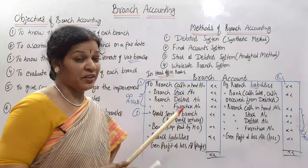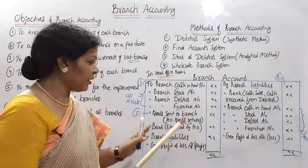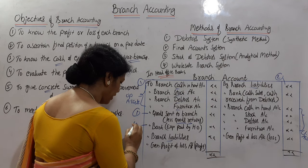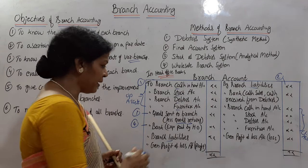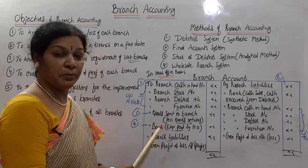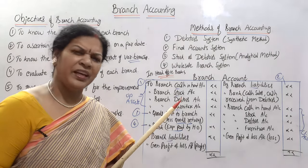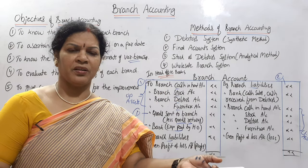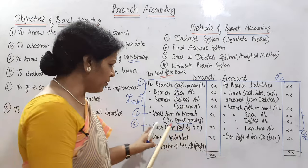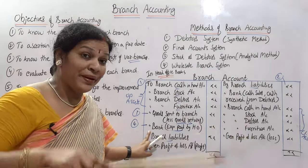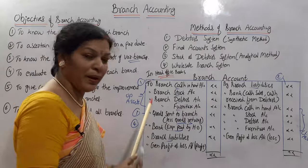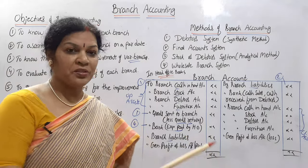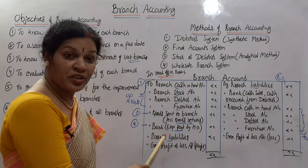This entry — goods sent to branch — you will always find. In consignment we used to write goods sent on consignment on the debit side; in the same way, goods sent to branch on the debit side. If any returns exist, we deduct them, just like purchases minus purchase returns. Apart from this, you will find another entry — branch expenses. Expenses paid by the head office — this is the fourth entry. Any kind of expenses: cartage expenses, advertising expenses, or any kind. If all expenses are paid by the head office, we write 'to bank' (expenses paid by head office).